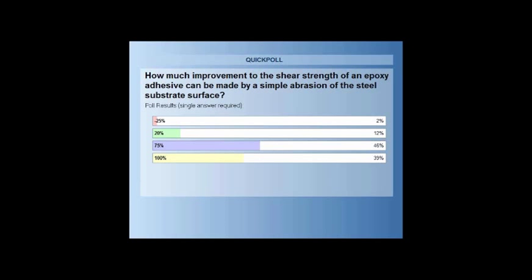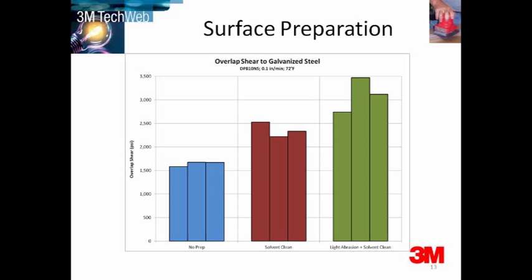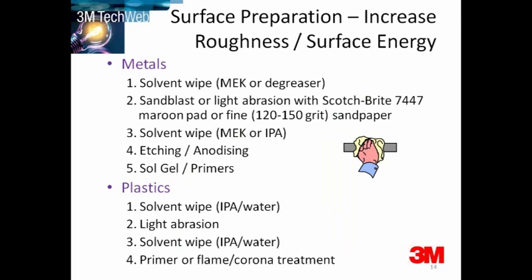By simply abrading a metal surface — a steel surface — and cleaning it, you can double the strength of the adhesive: a 100% increase in shear strength. So surface preparation is a key factor in obtaining good adhesion and in obtaining good performance in the bonded joints. Surface treatment is surface specific and also relates to the harshness of the environment of the application.